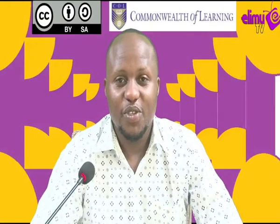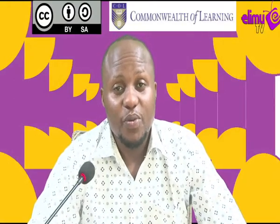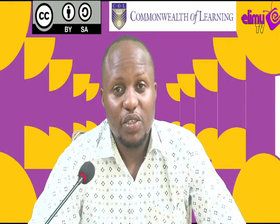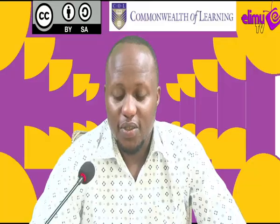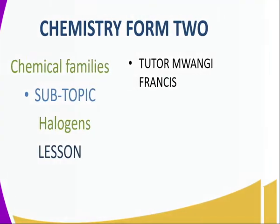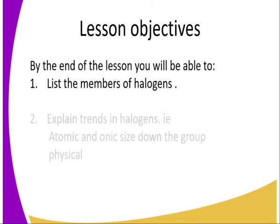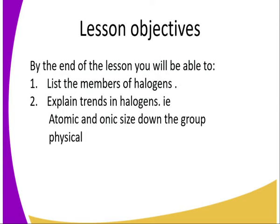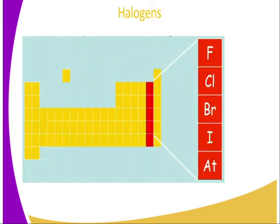Hello viewers, welcome to Elimu TV, the station where you watch and learn. I'm your tutor, Mr. Mwangi Francis, taking you through Chemistry Form 2. Stay tuned throughout the lesson. By the end of this lesson, you'll be able to list the members of halogens, explain trends in atomic and ionic size down the group, and give some physical and chemical properties.